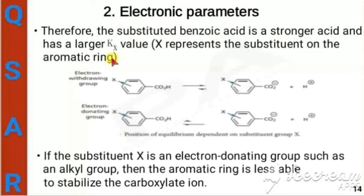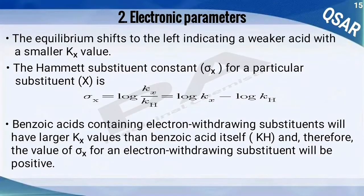If the substituent is an electron-donating group, for example an alkyl group, the aromatic ring is less able to stabilize the carboxylate ion. For electron-withdrawing substituents, the equilibrium shifts more to the ionized form; for electron-donating substituents, the equilibrium shifts more to the unionized form — that is, the equilibrium shifts to the left — indicating a weak acid with a smaller kX value.